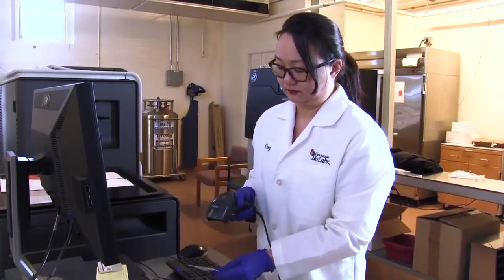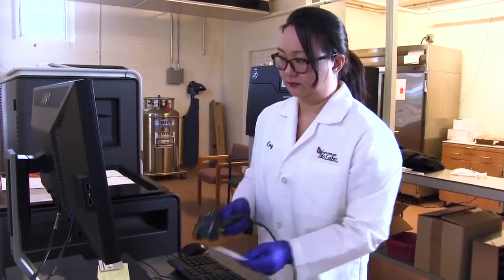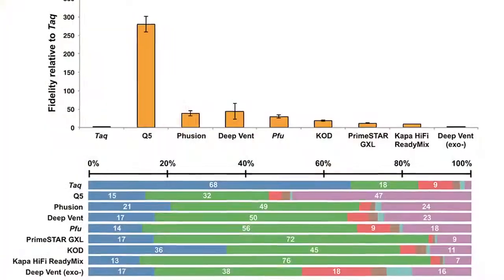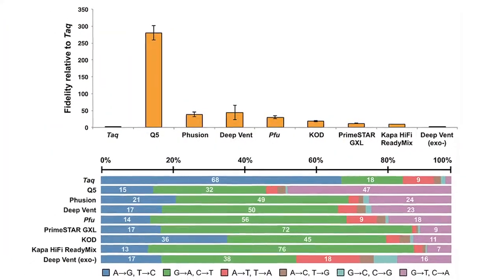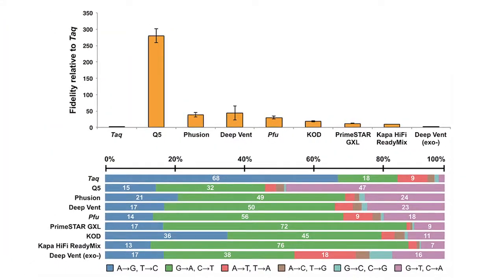We tested a variety of different DNA polymerases in PCR and generated SmartBell libraries from those PCR products. After sequencing, we could compare the sequencing reads to the reference sequence and catalog the different types of errors that we saw.